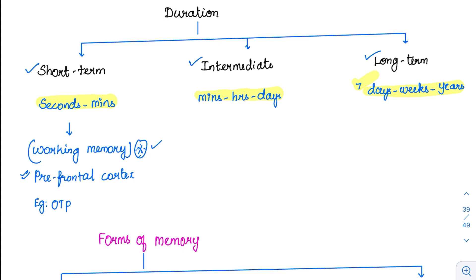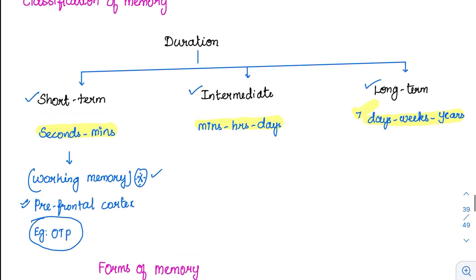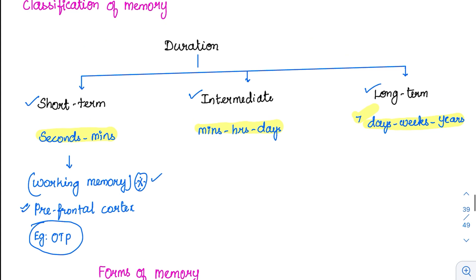What is the best example? Entering an OTP in the mobile. Whenever you fill in the details of your cart, an OTP will come to you. You will remember that OTP for a very short span of time — this is done with the help of the prefrontal cortex. Once you enter the OTP, you forget the number.